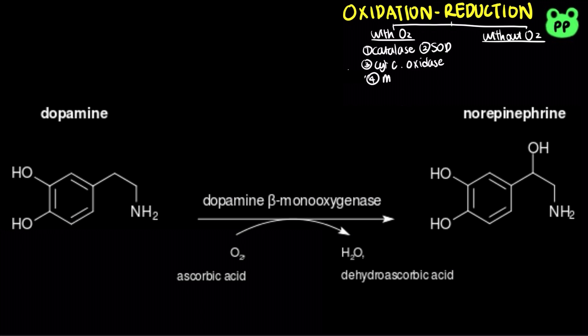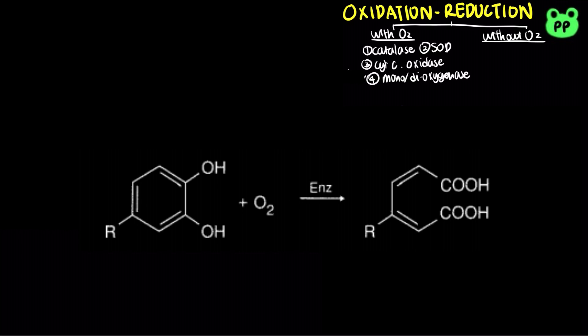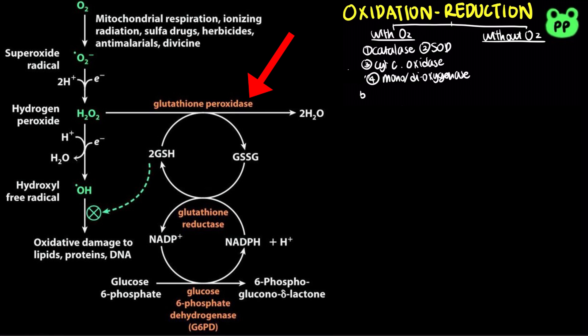Monooxygenases reduce two atoms of dioxygen into one hydroxyl group and one water molecule. On the other hand, dioxygenases reduce dioxygen into carboxyl groups. Lastly, glutathione peroxidase catalyzes the reduction of hydrogen peroxide into two water molecules and the oxidation of two glutathiones into glutathione disulfide. By reducing hydrogen peroxide, this enzyme also functions in protecting us from oxidative damage.